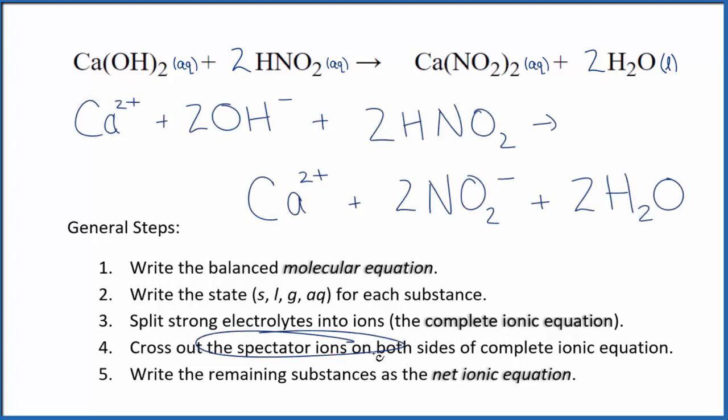Now we can cross out spectator ions. They're on both sides. The only thing that I see that's on both sides here, that's going to be the calcium ion here in the reactants and in the products. That's a spectator ion. So we'll cross that out.